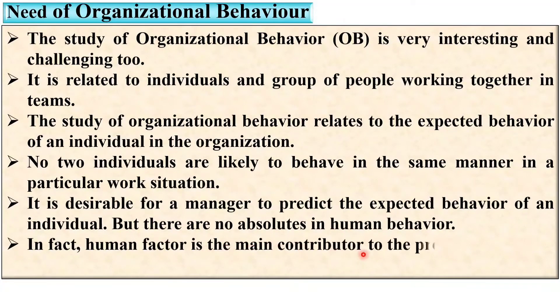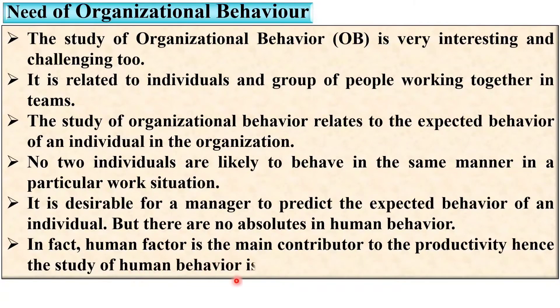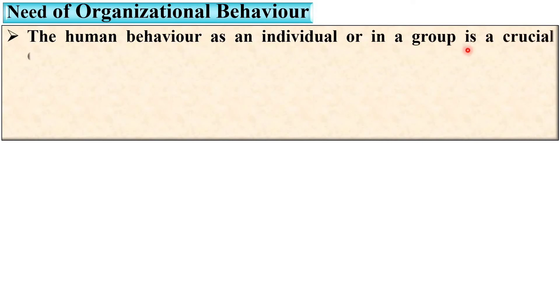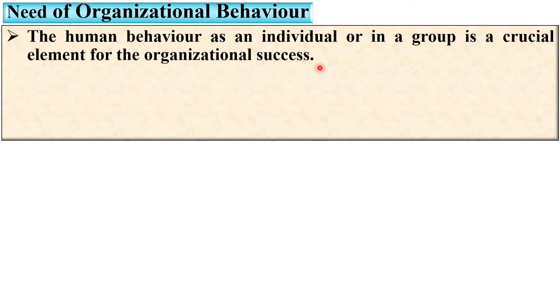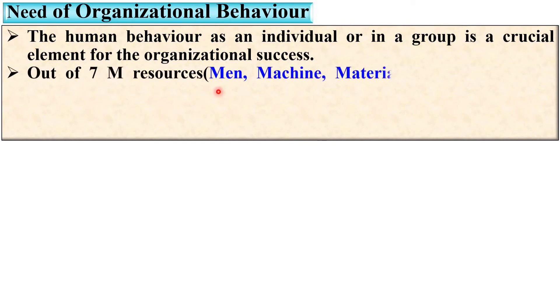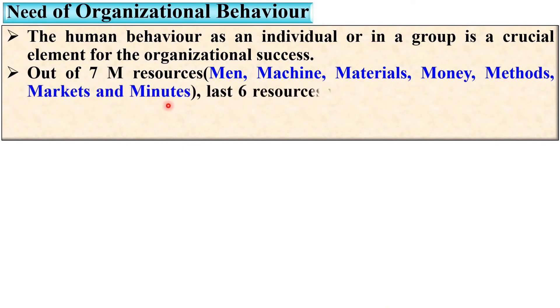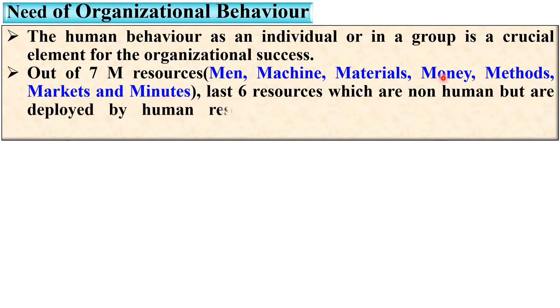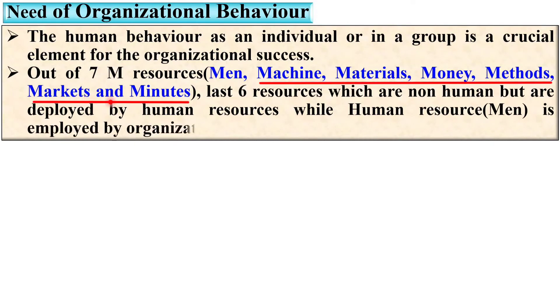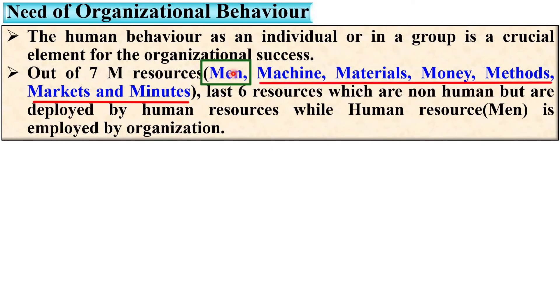Human factor is the main contributor to productivity, and hence the study of human behavior is very important. Human behavior as an individual or in a group is a crucial element for organizational success. Out of the seven resources — man, machine, materials, money, methods, markets, and minutes (time) — the last six, which are non-human, are deployed by human resources, while human resource (man) is employed by the organization. This shows why studying behavior in organizations is so important.